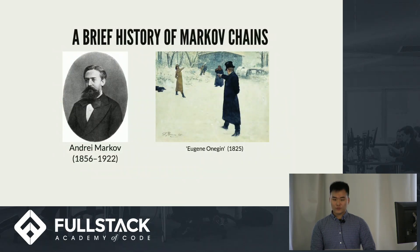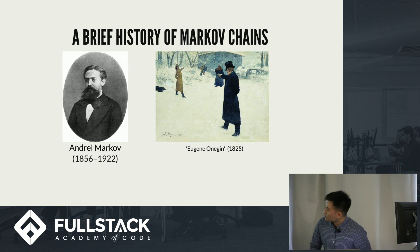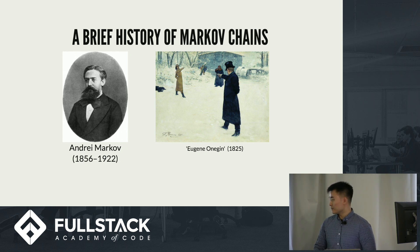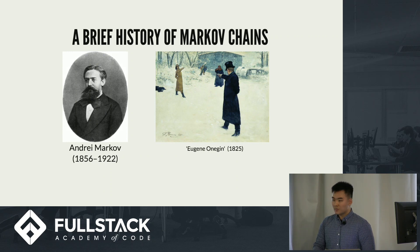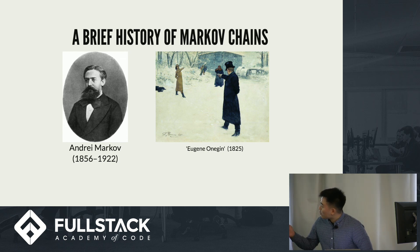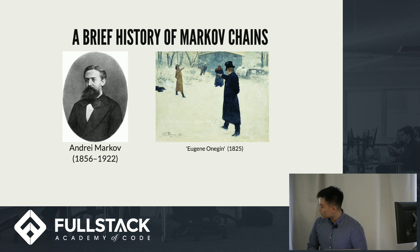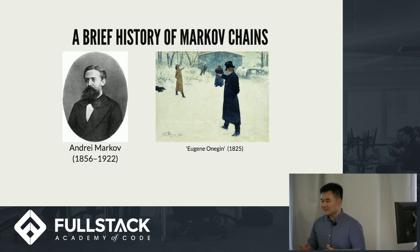Before we start with what Markov chains are, we should start with a little brief history lesson. To your left is Andre Markov, who Markov chains was named after because he discovered it. He discovered it after doing some probabilistic analysis on a Russian poem by Alexander Pushkin, and the poem is named something closer to Yevgeny Onegin — something like that. I'm not Russian.